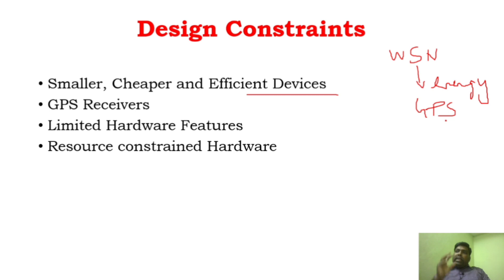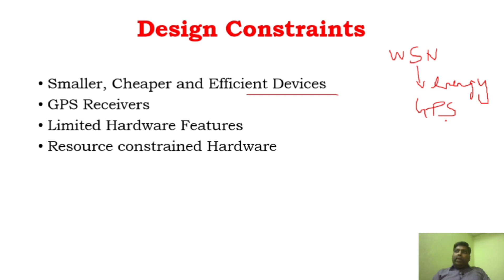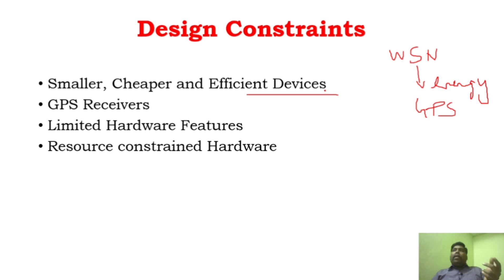The designer has to work out in such a way that the application works very effectively without connecting GPS. In some cases, we have to compromise energy depending on the application and need. Normally, in wireless sensor networks, lower energy is very important. There will be only limited hardware features — you will not be able to use sophisticated hardware. There will be resource constraints in hardware as well as in techniques and protocols.